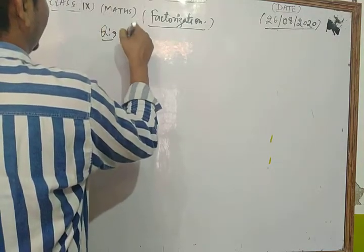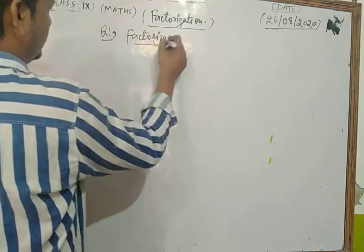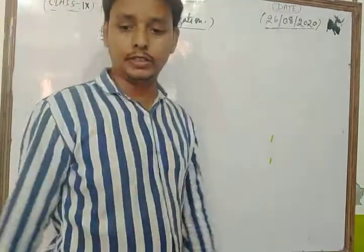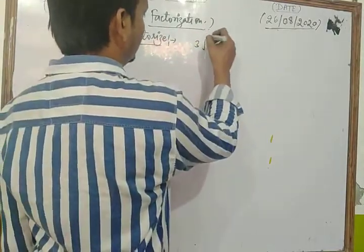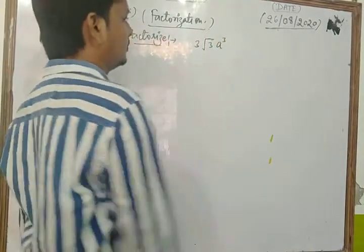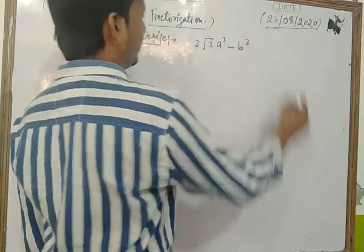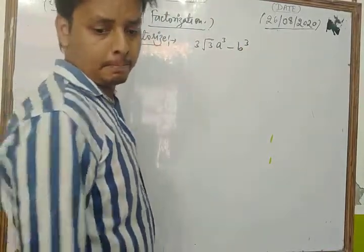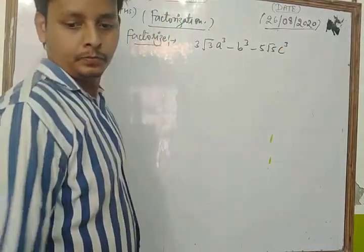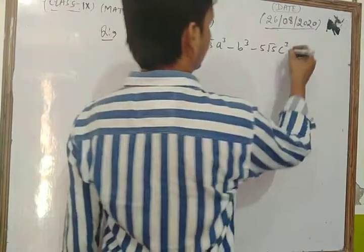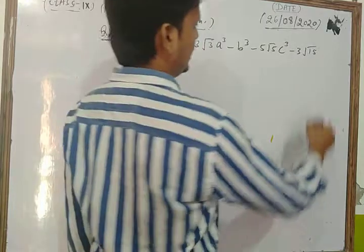Your next question is: factorize 3√3 a³ - b³ - 5√5 c³ - 3√15 abc.